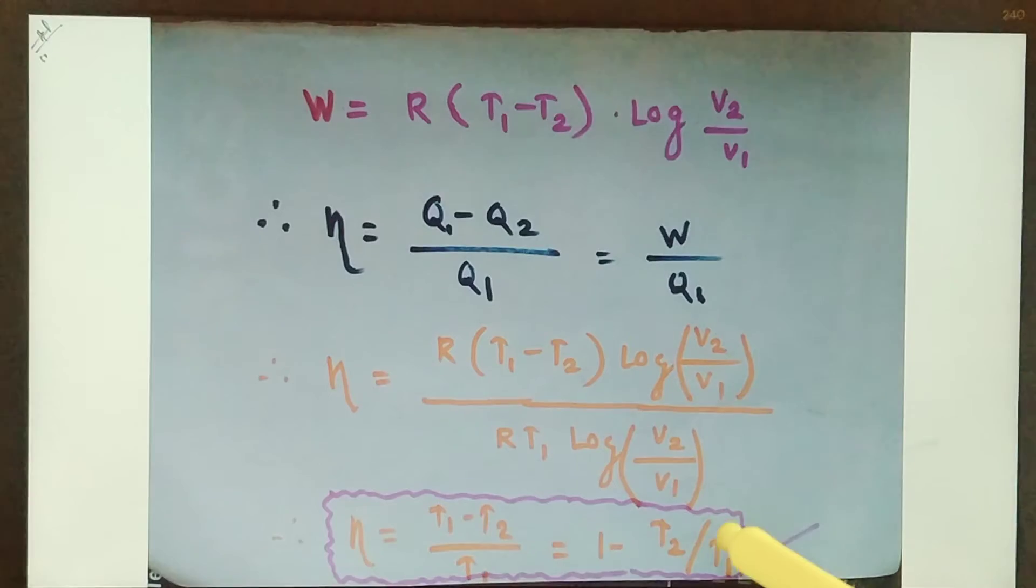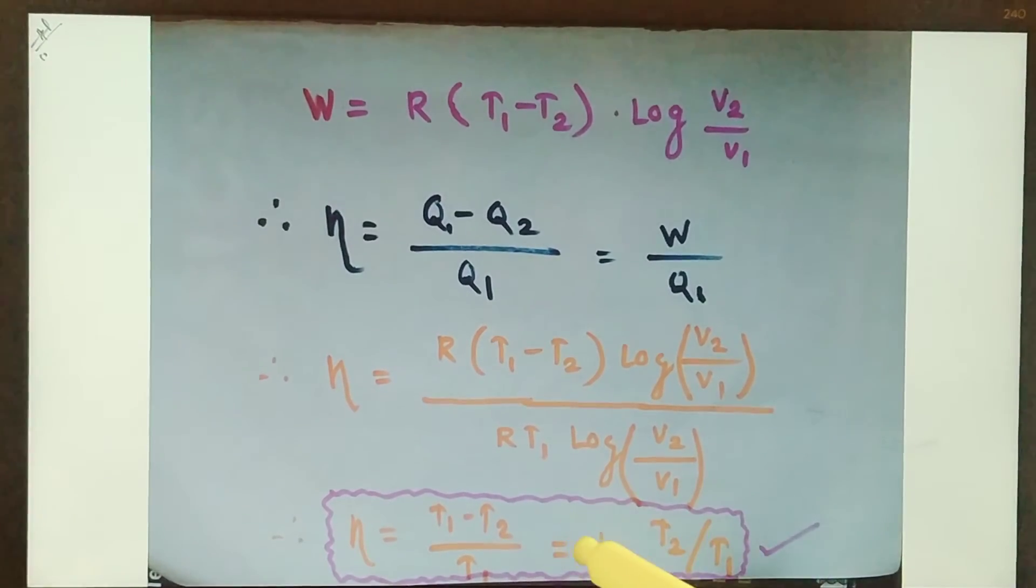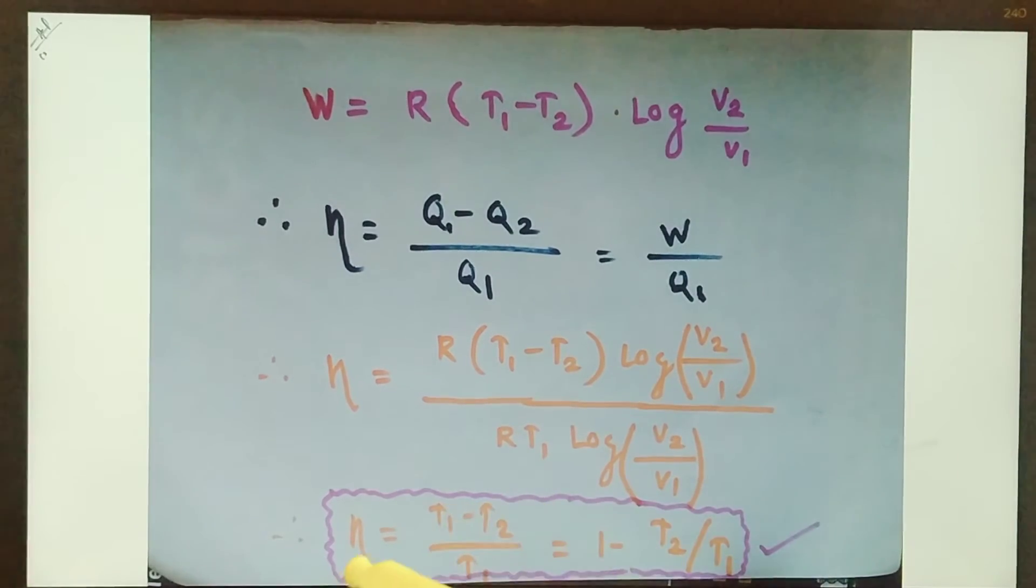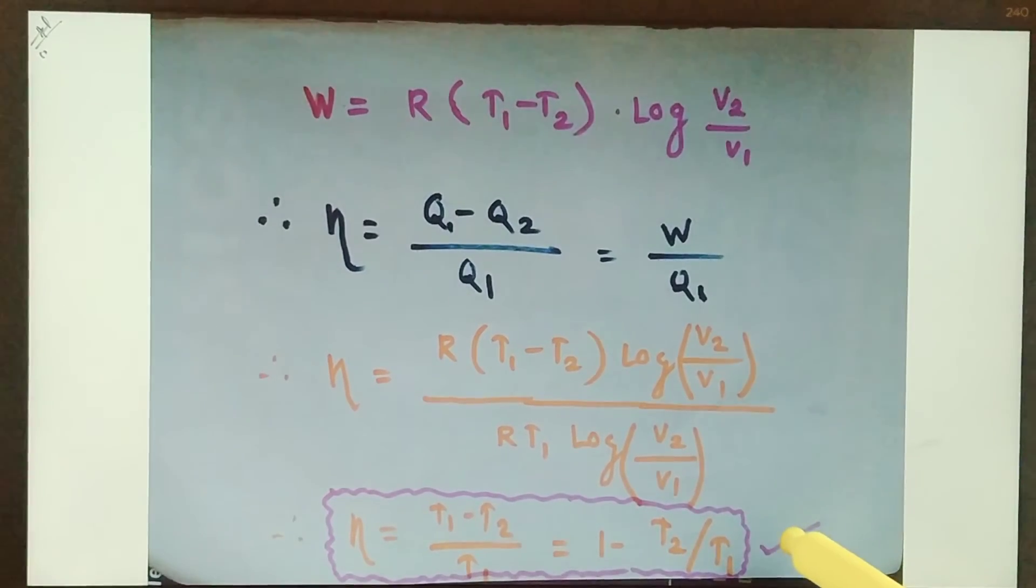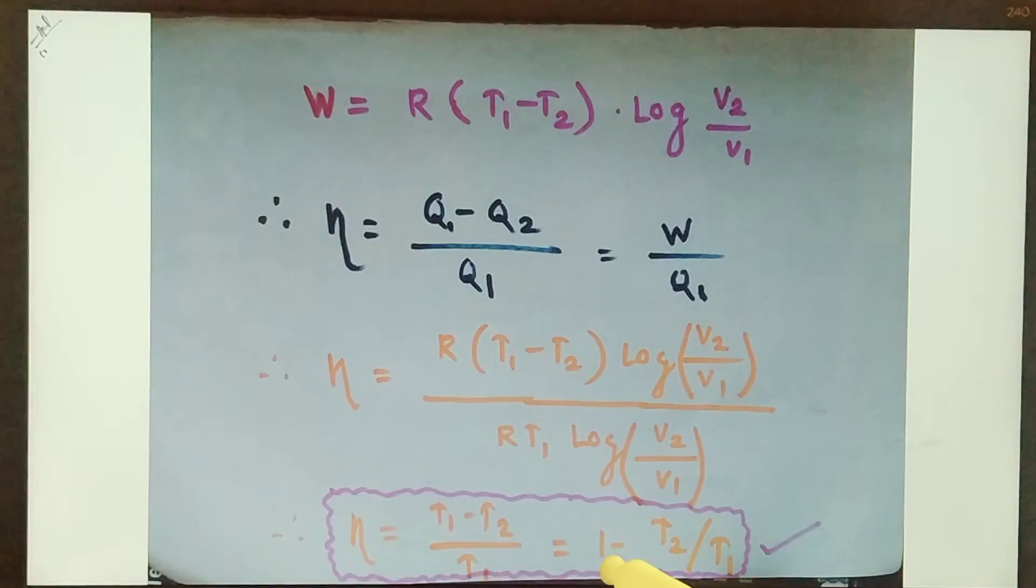If you look at the last expression, you will find that this is 1 minus T2 by T1. So when T2 upon T1 is equal to 0, then only efficiency of any material will be equal to 1, means 100 percent. Otherwise, it will always be less than 1, that is less than 100 percent. So this is how Carnot has finally proved that the efficiency of any material or any engine cannot be 100 percent and it will always be lesser than 1, that is lesser than 100 percent.